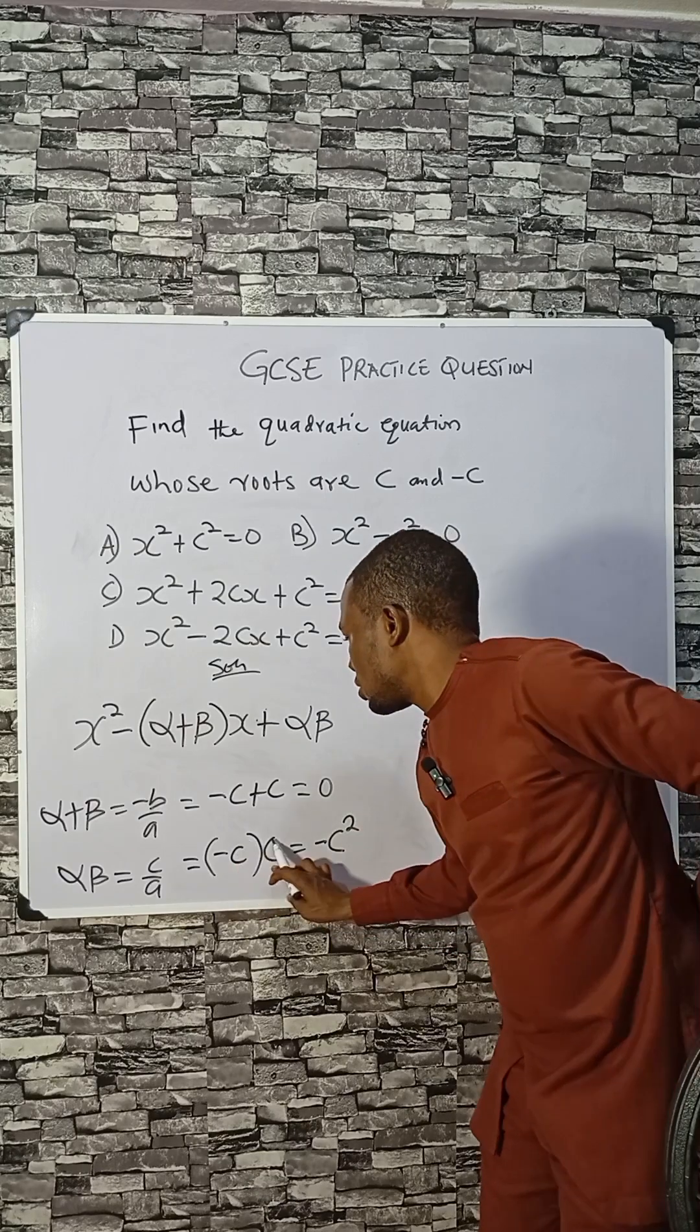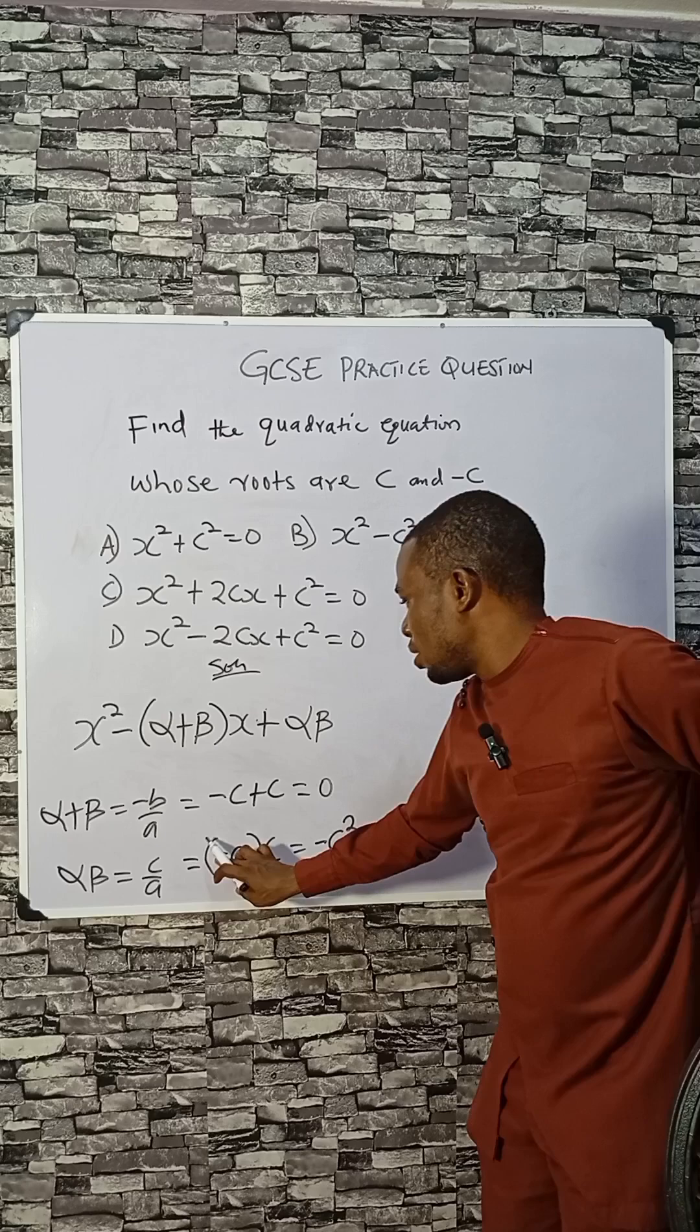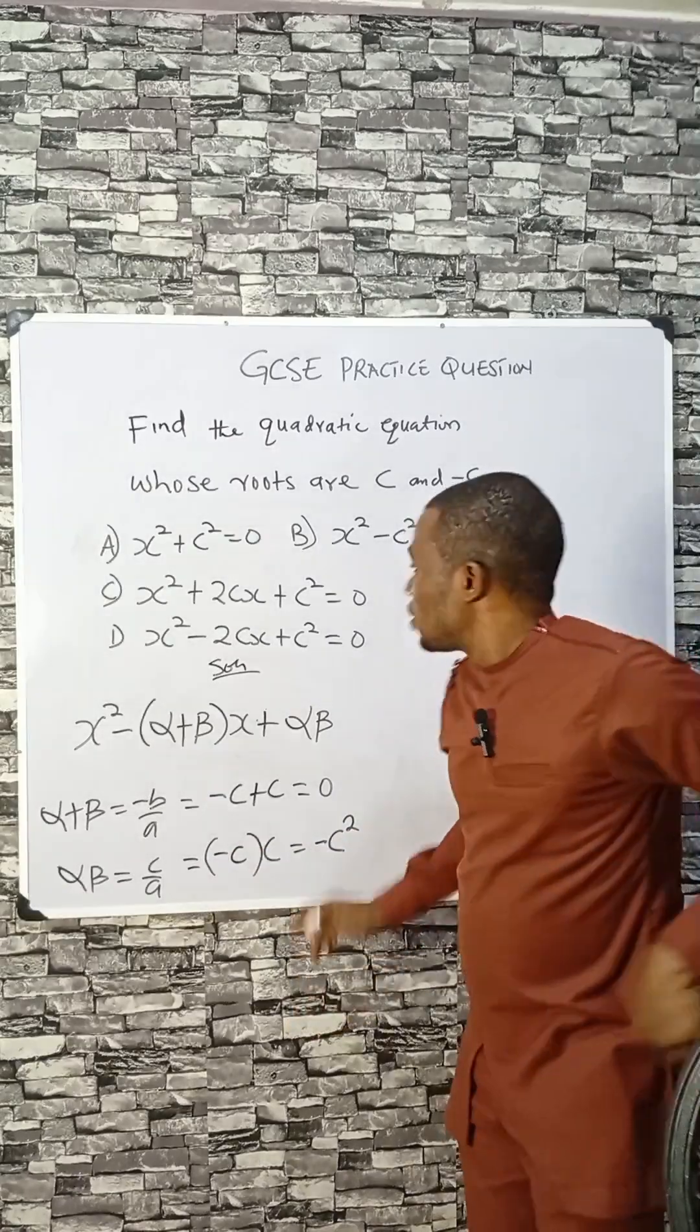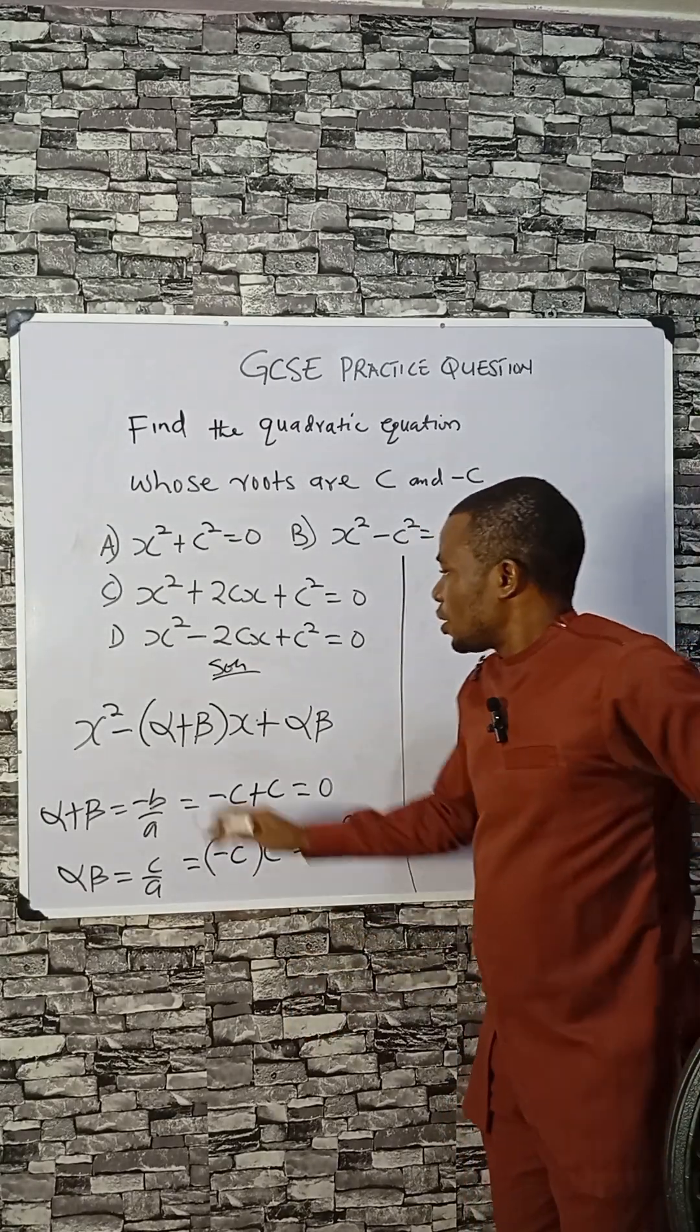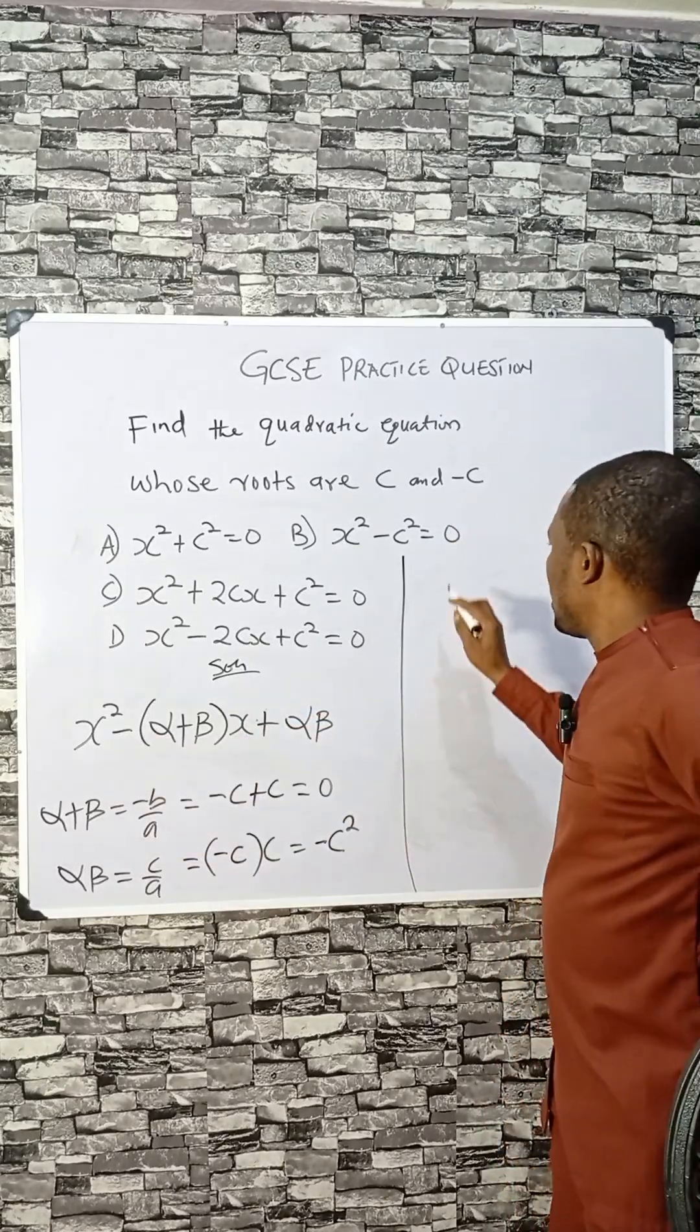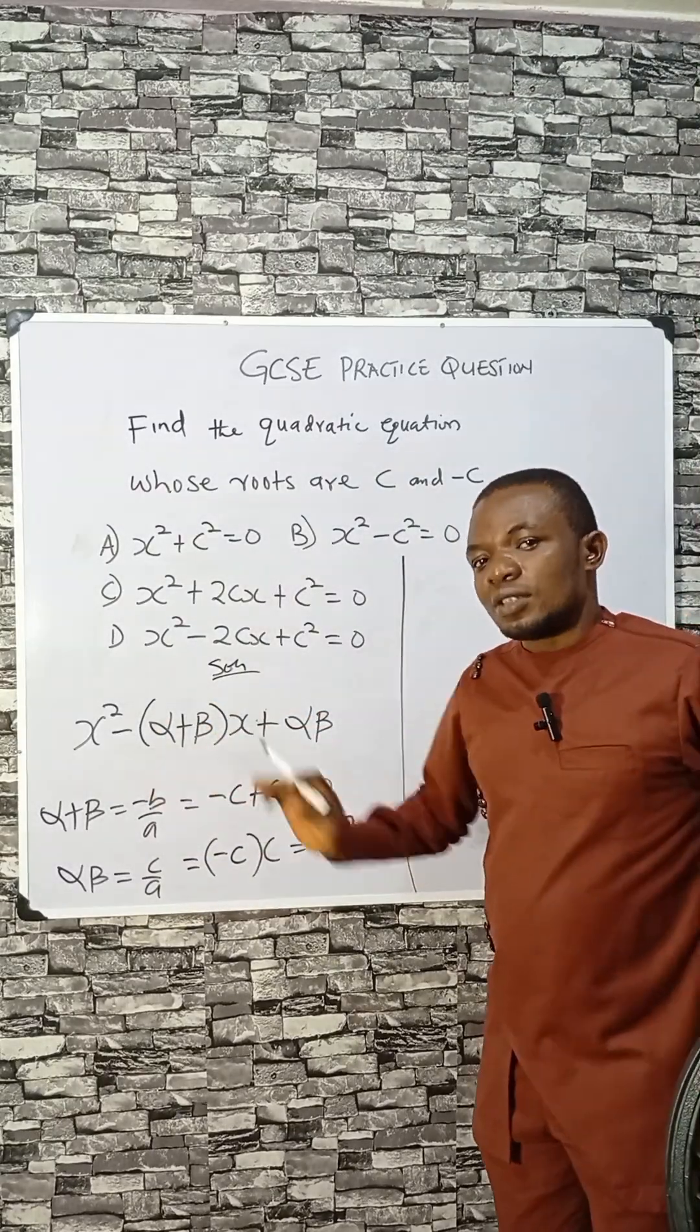square. If you multiply c by c, you have c squared, and then the negative sign goes with it. And now we are done. Going back, now let's form the quadratic equation.